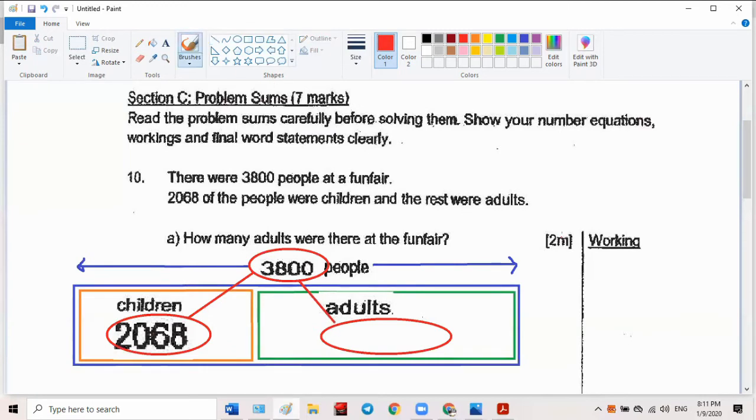3800 minus 2068. This one cannot borrow from here, this one doesn't have. Borrow one from here, become 9. Then borrow, become 7.